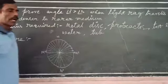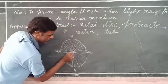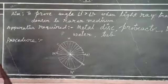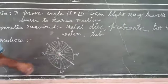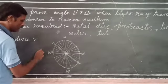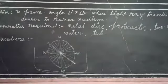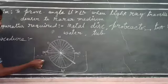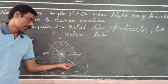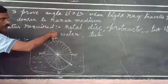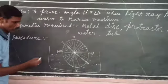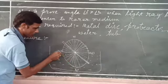Take two straws and fix them from the center of the metal disc on either side. Now submerge this protractor disc in water such that the M–M-dash line coincides with the surface of the water.